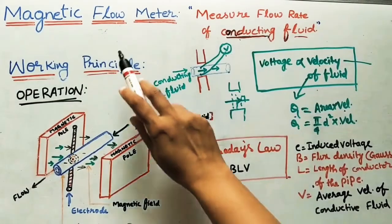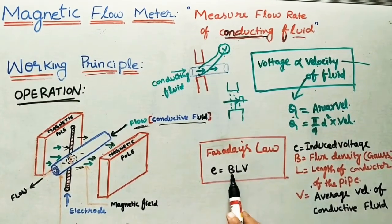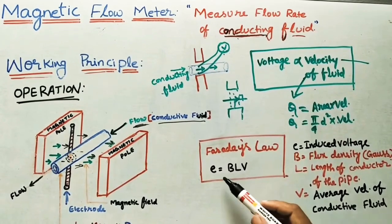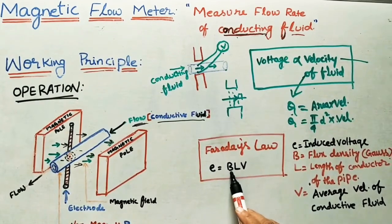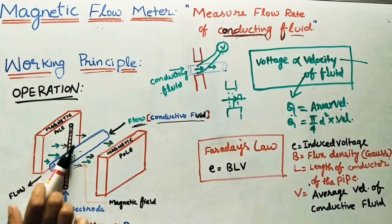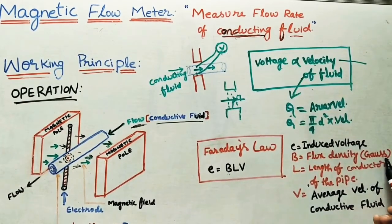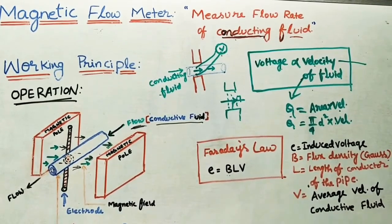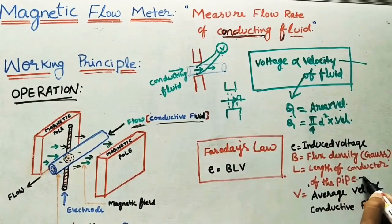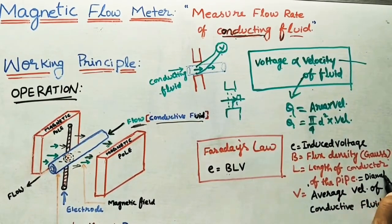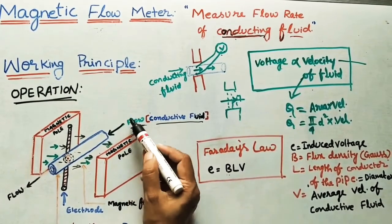This magnetic flow meter follows Faraday's law. According to this law, the induced voltage E equals B × L × V. Here, E is the induced voltage, B is the magnetic flux density — the density of the magnetic field, with units in Gauss. L is the conducting length of the pipe — that is, the diameter of the pipe from one side to the other. V is the average velocity of the flowing fluid.